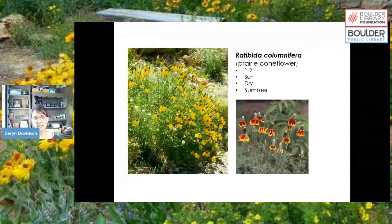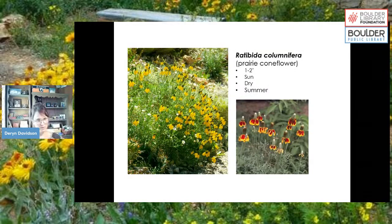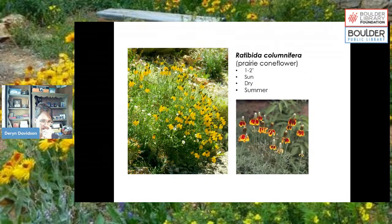Ratibida columnifera, or prairie coneflower, is a great one. It gets one to two feet tall and about two feet wide. It likes sun, can handle dry conditions, and blooms all summer. You can get yellow varieties or some with reddish-yellow coloring. Mirabilis multiflora, the desert four o'clock, doesn't look like it would be xeric, but it has a very deep taproot and is covered in purpley-pink flowers all summer long.